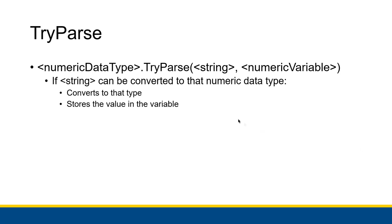With TryParse, if the string that we give it can be converted to that particular numeric data type specified by the numeric data type that we type before the period and the TryParse, then TryParse will actually convert it to the type. So it checks to see if it can be converted, if it is valid, and if it is valid, then it actually does the conversion and it stores the value in the variable that we passed in, in this numeric variable right here.